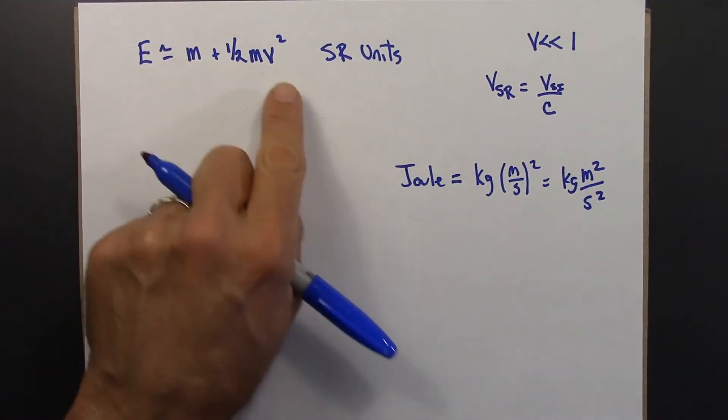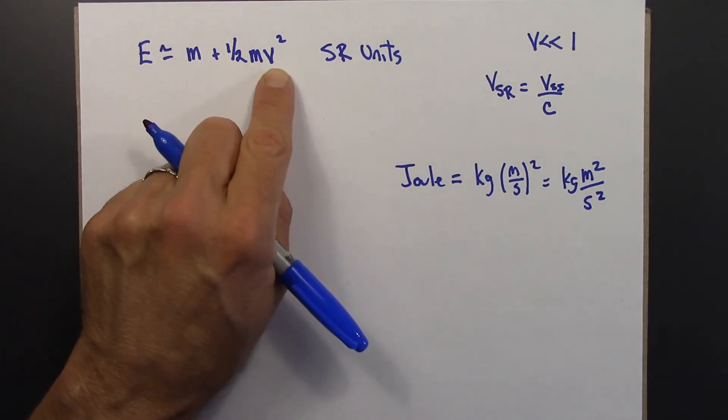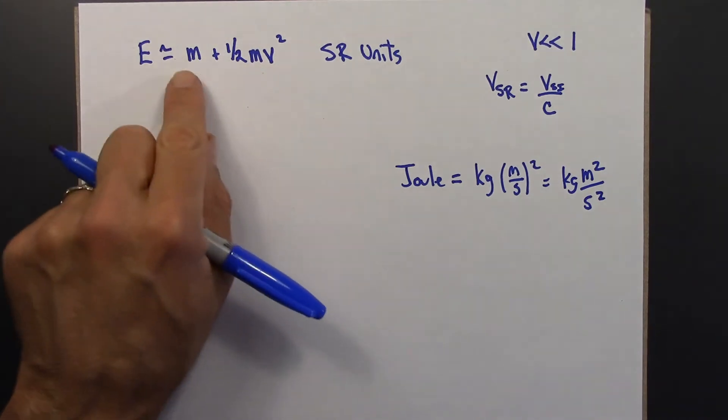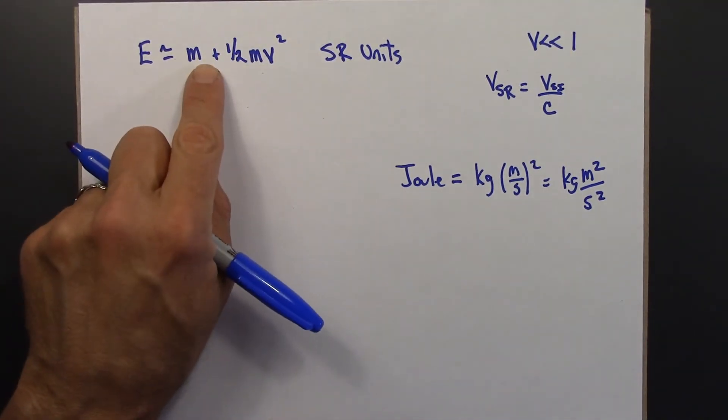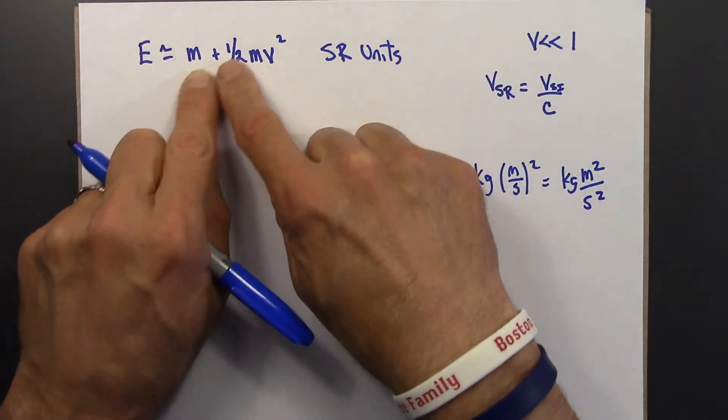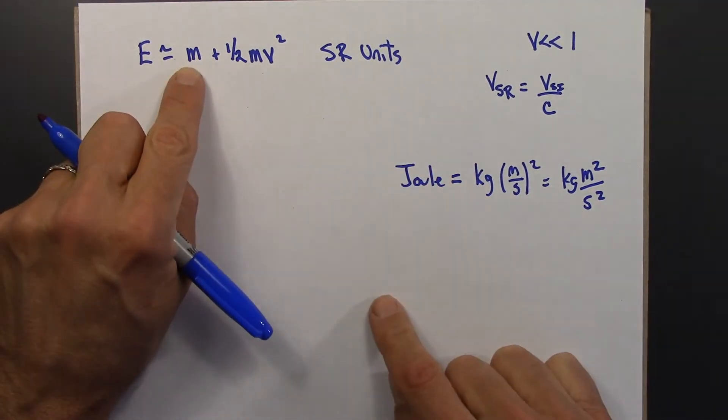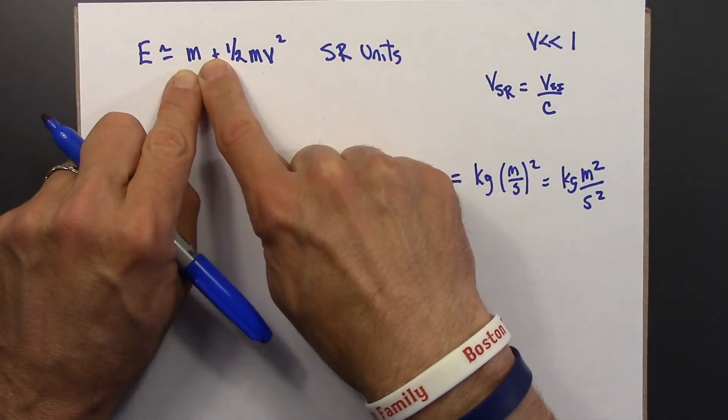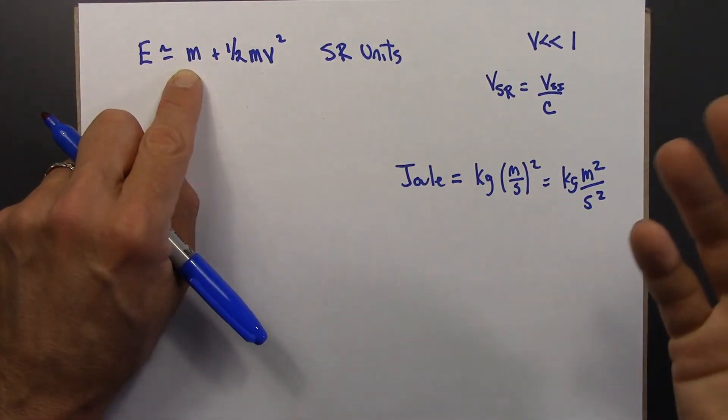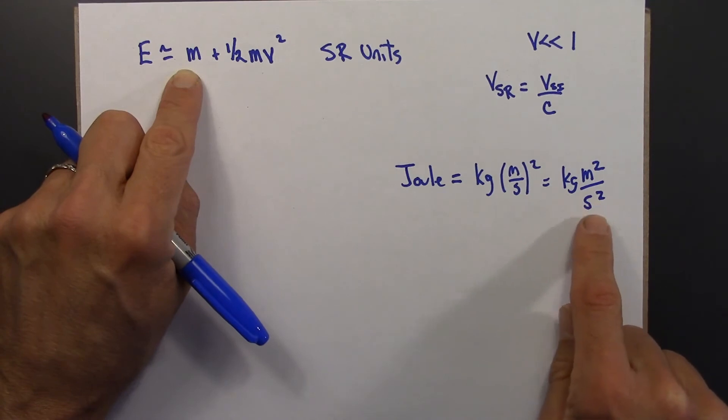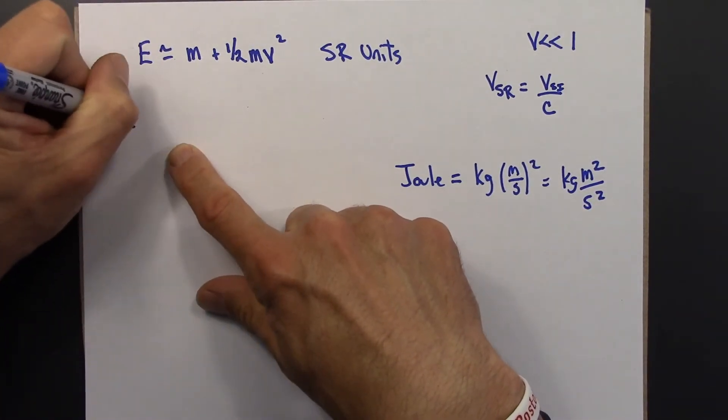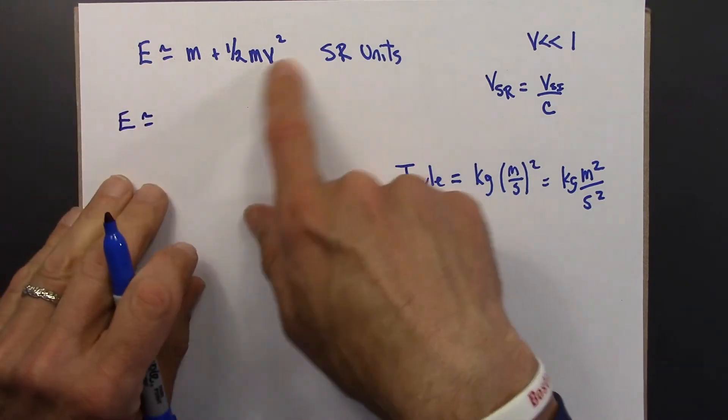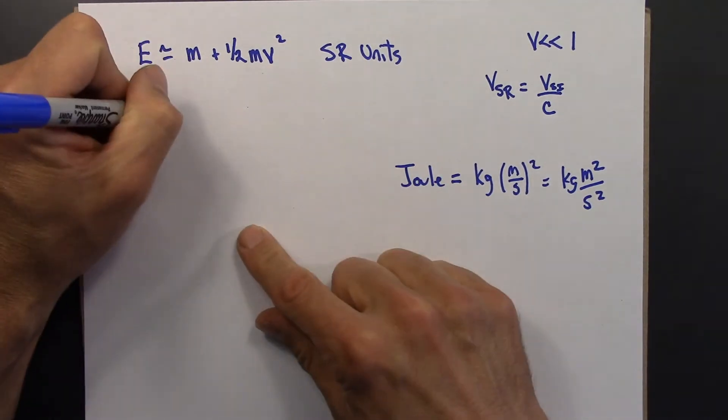So suppose you wanted to convert this physical equation into SI units, regular units. Well, we would need to multiply this term by C squared. And then we would also have to multiply, to be fair to keep the units the same, this term by C squared. Another way to see that is, if we've got something that's in SR units is just kilograms, we're going to need to multiply it by velocity squared in order to get it into joules.